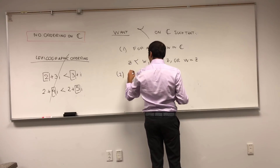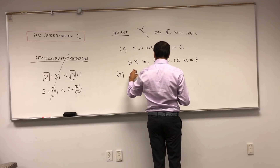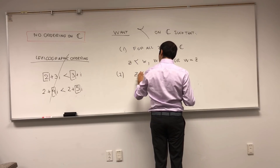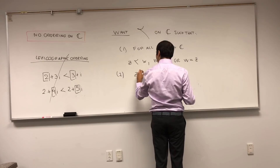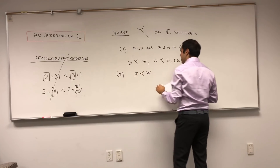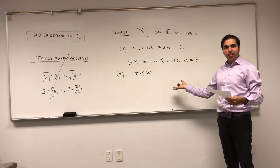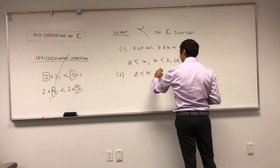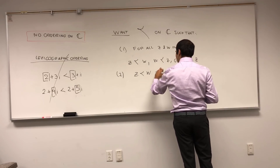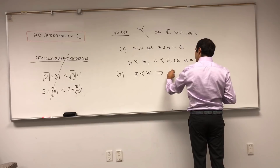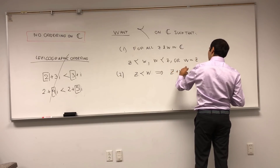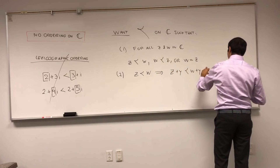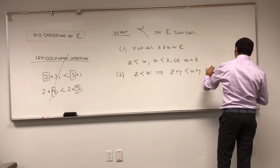Moreover, what you want is that if you have one thing that's less than the other, adding something doesn't affect the order. So Z less than W implies Z plus Y is less than W plus Y, for all Y.